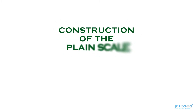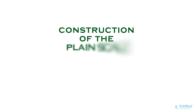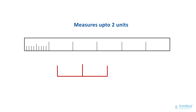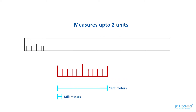In this video, we will see the construction of a plane scale. It is a simple scale that reads, or measures, up to two units. That is, a unit and its subdivision — for example, centimeters and millimeters.